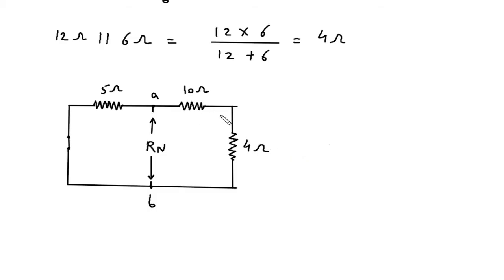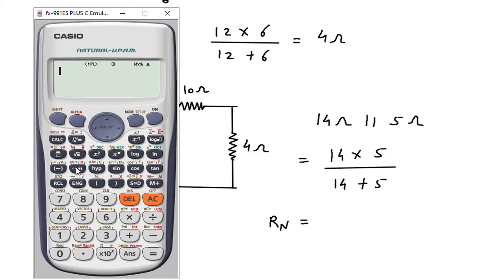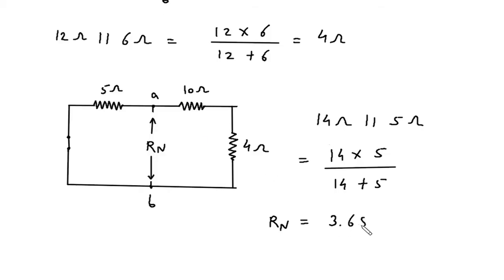Now here we can see this 10 ohm and 4 ohm are connected in series, so this will be 14 ohm. Now it is in parallel with this 5 ohm. So Rn is equal to 14 times 5 divided by 14 plus 5, which gives 3.68 ohm. So 3.68 ohm is the value for Rn.